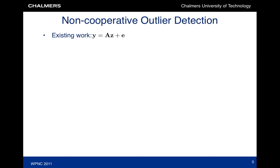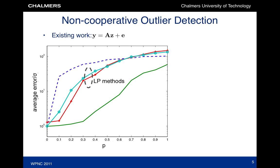A popular technique to deal with outliers is linearized least squares with linear programming. The errors due to outliers create a sparse error pattern E, which can be determined by solving a linear program. The results of two such algorithms are shown in the figure. We see that only for p less than 10% reasonable performance can be achieved, while for all other p, degradations are incurred.